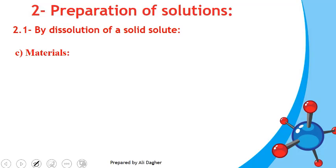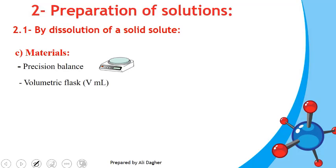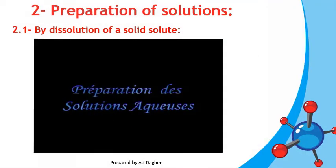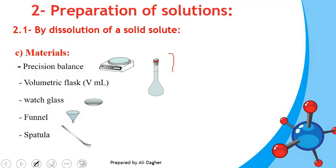The materials needed to prepare a solution from a solid solute are: a precision balance, a volumetric flask of V milliliters, a watch glass, a funnel, and a spatula. The precision balance and the volumetric flask are essential — we cannot prepare the solution without either of these two items. You must mention both tools when asked about solution preparation.